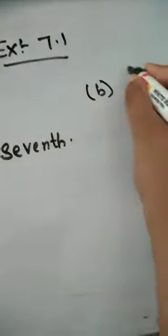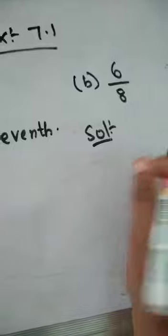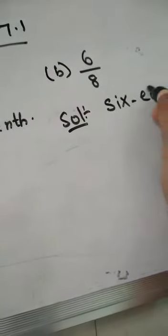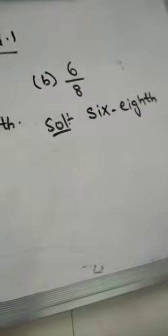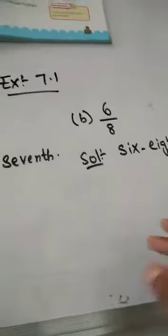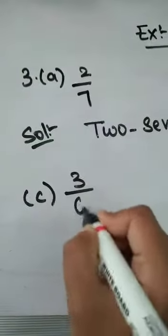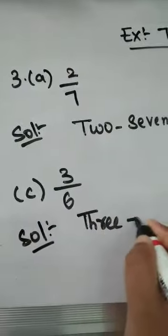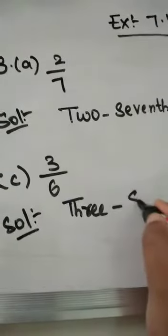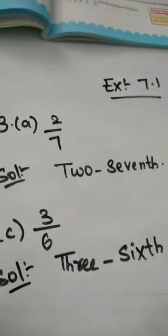Second question: 6 by 8. So we have to write this fraction in words — 6 eighth. Third one: 3 by 6. We have to write this in words — 3 sixth. So like this you have to write. Remaining you try it as your homework.